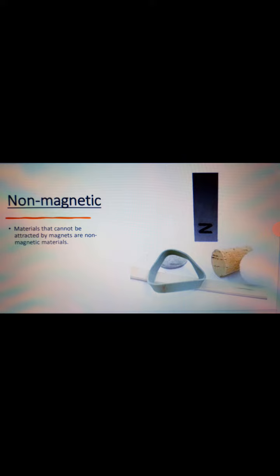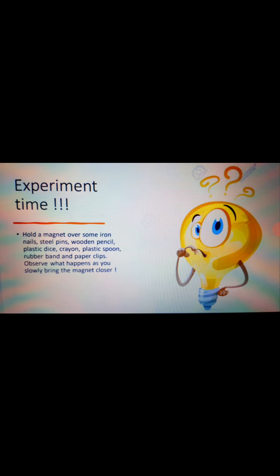Some materials are non-magnetic — they cannot be attracted by magnets. For example, in this picture you can see cork, rubber band, wooden ruler, and plastic ball are not attracted by the magnet. They are non-magnetic materials.